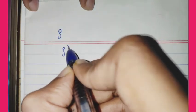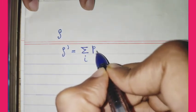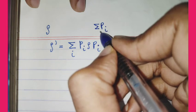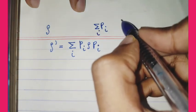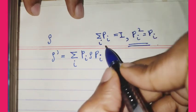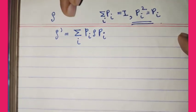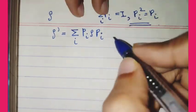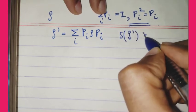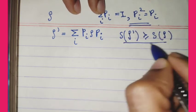Now consider another important theorem: if you perform a non-selective projective measurement on density matrix rho, you obtain rho prime equals summation over i Pi_i rho Pi_i, where the projectors satisfy summation_i Pi_i equals identity and Pi_i squared equals Pi_i. The claim is that S of rho prime is greater than or equal to S of rho — projective measurement increases entropy by introducing disorder into the system.